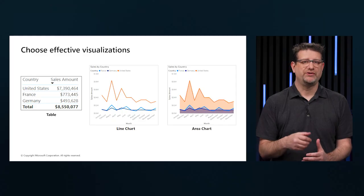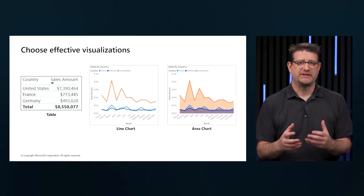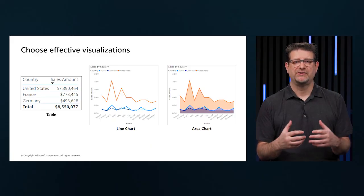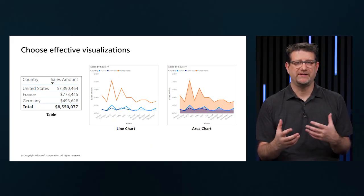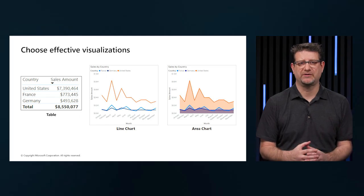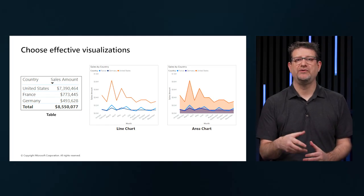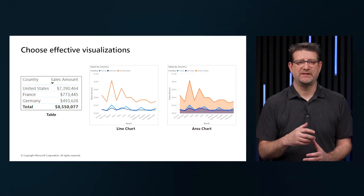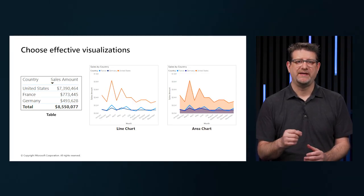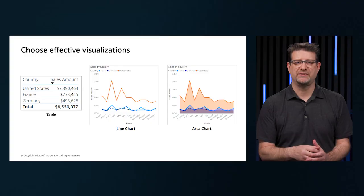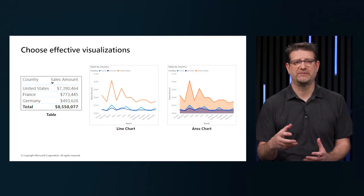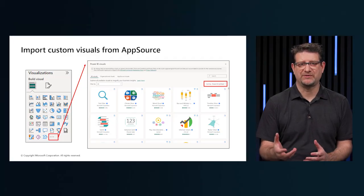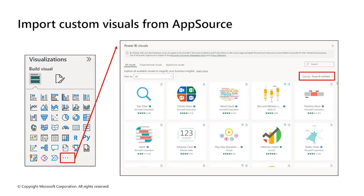It is important to choose an effective visualization, displaying the data in the best way possible. Power BI has over 30 visuals, so selecting the right visual is critical in telling a compelling story with the data and helping users quickly gain insights from the report. When selecting the fields to display in the visualization, experiment with all different visualization types to find the one that works best. Additional visuals are available from Microsoft AppSource, or you can import a custom visual.